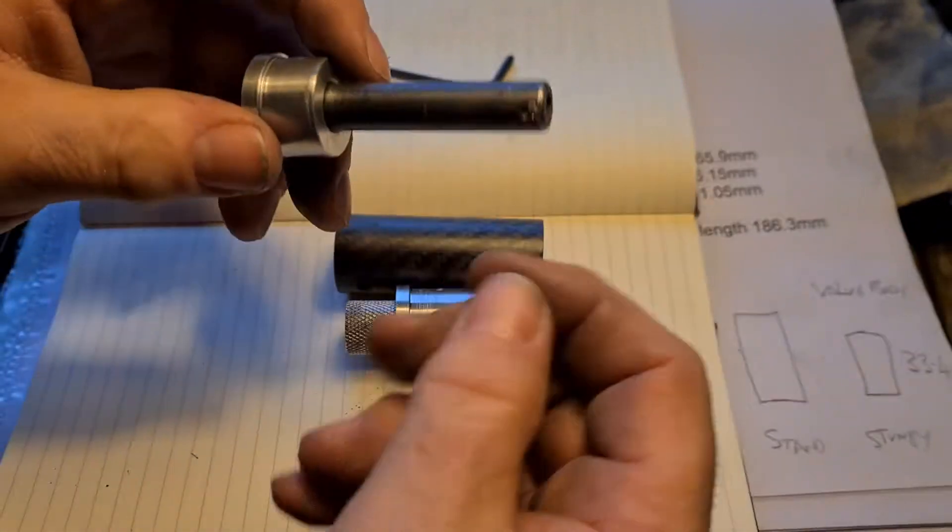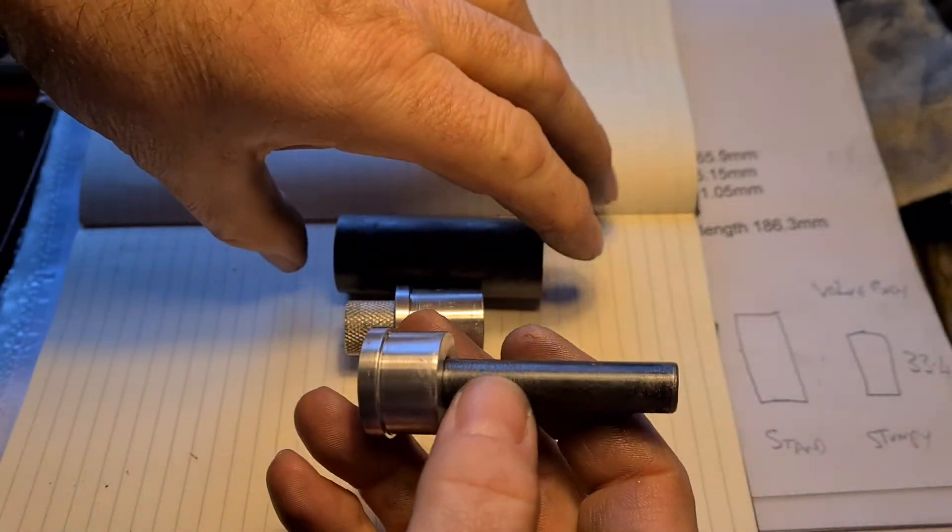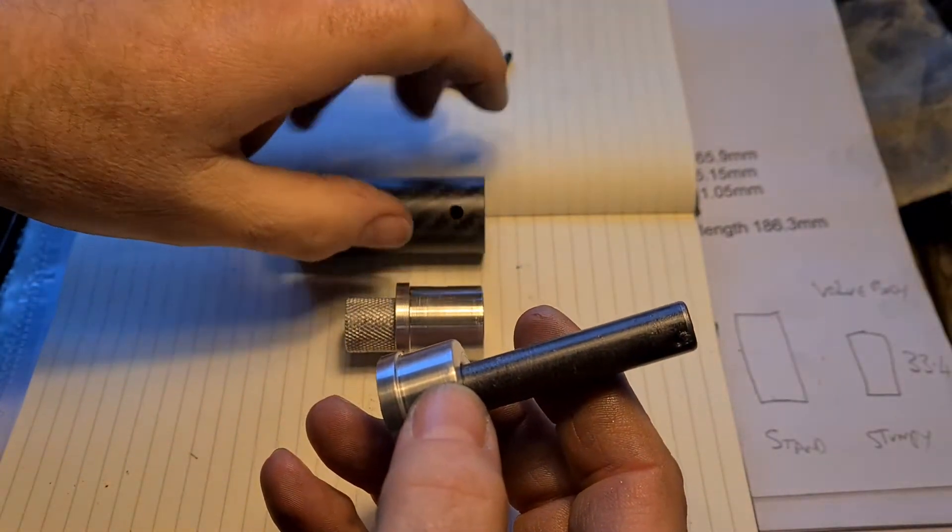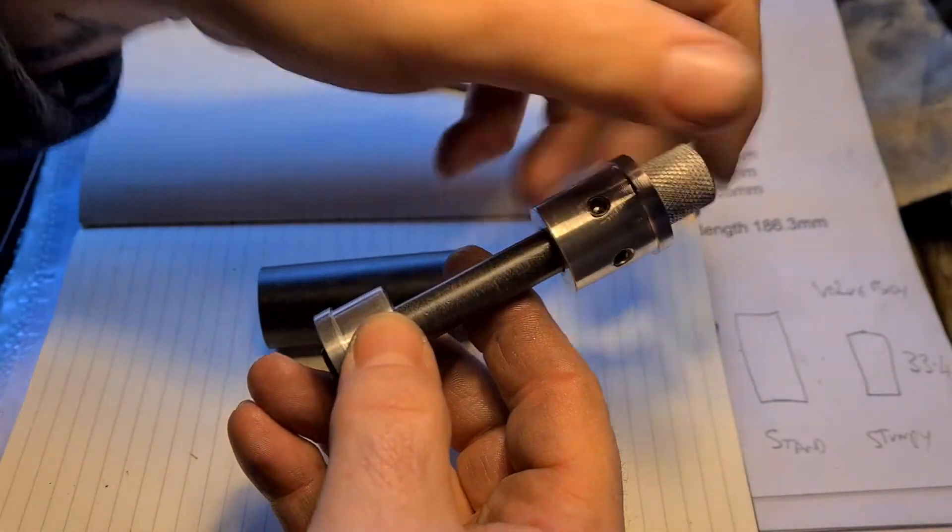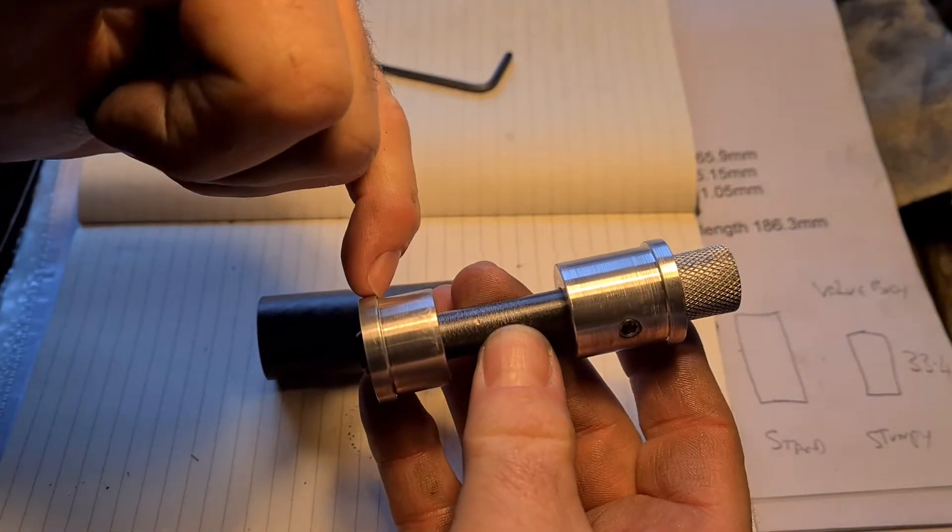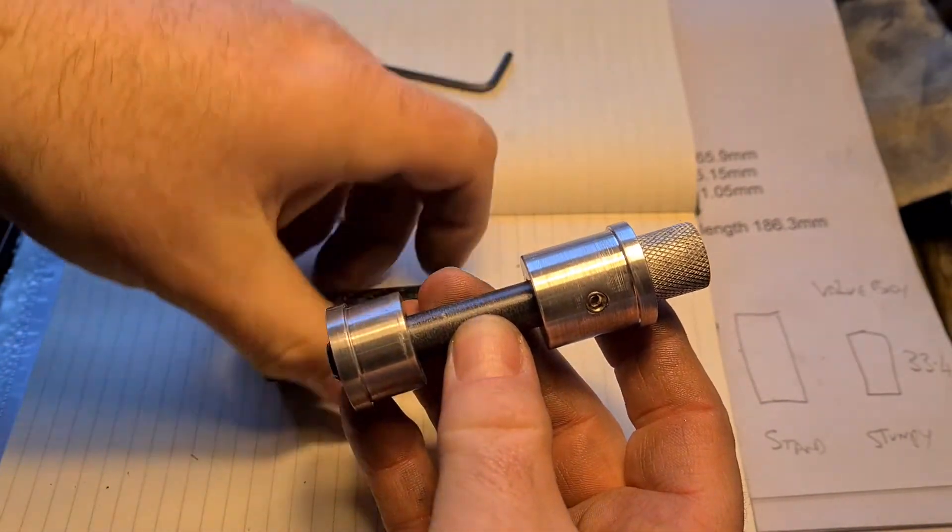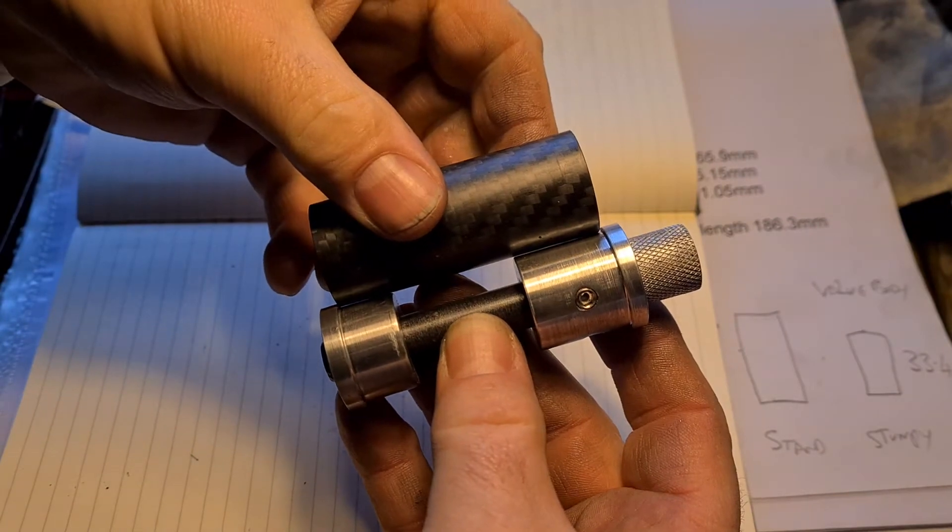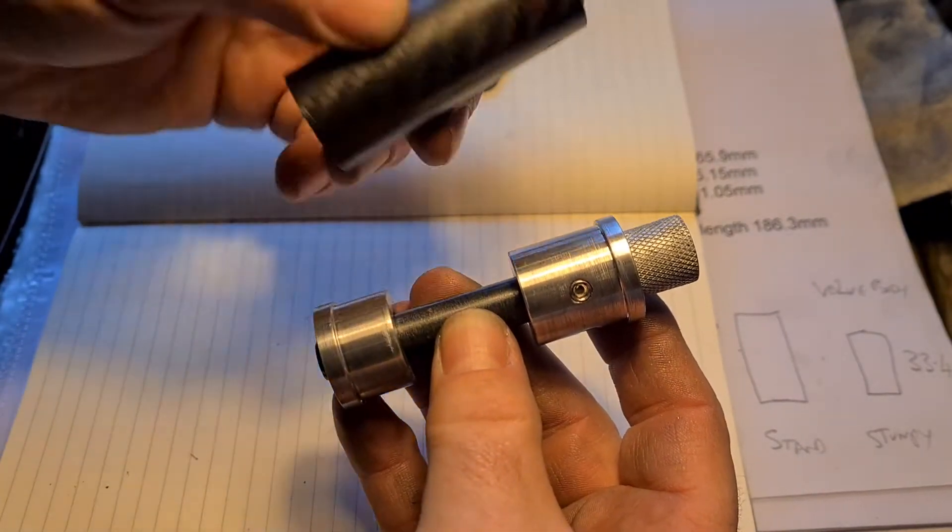So then you would put your front part on and you can take a measurement between there and there, then cut your tube to fit. Once you've got the right length and you're happy with it...